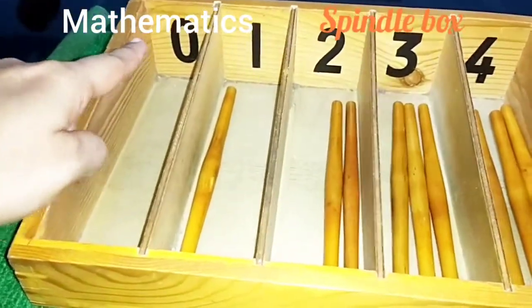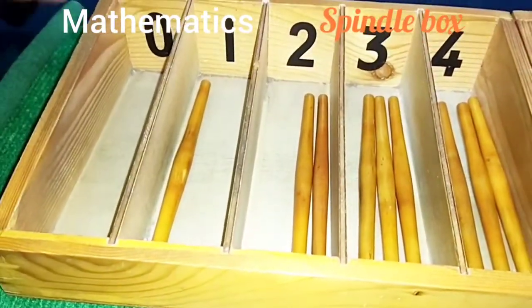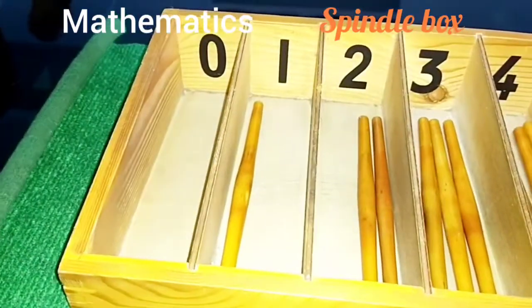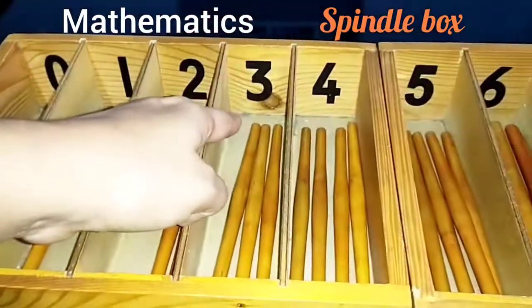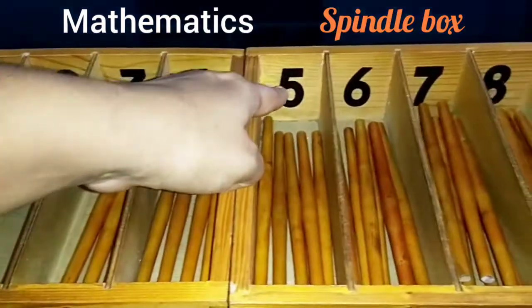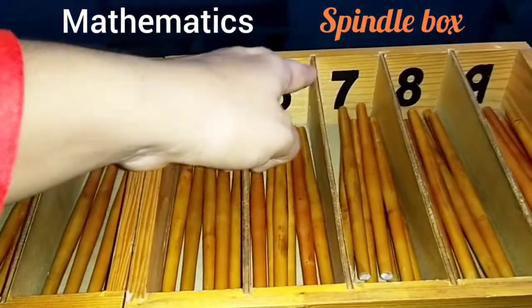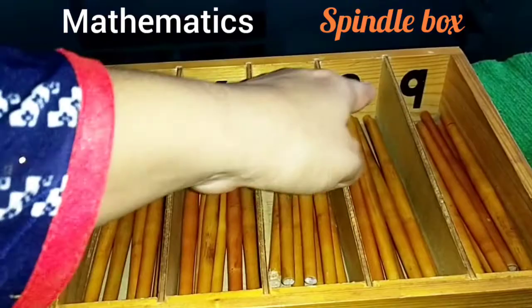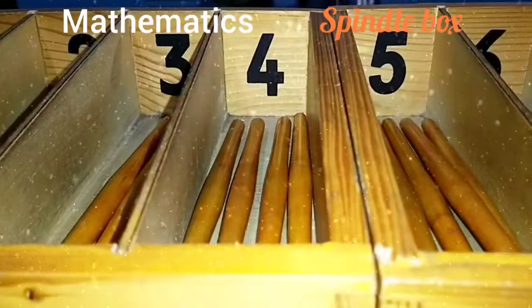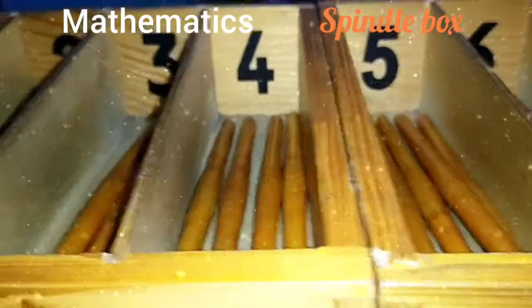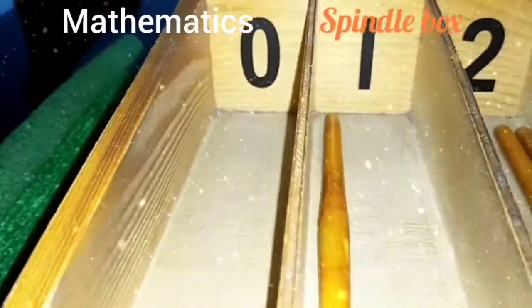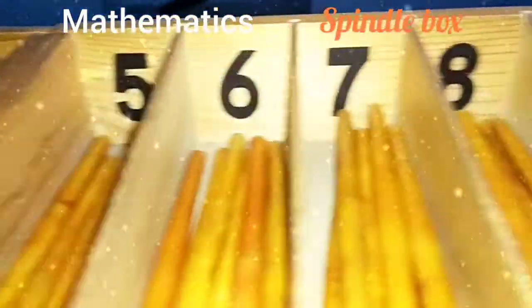Zero. Zero means nothing. So we don't put any spindles on this compartment. Then, one, two, three, four, five, six, seven, eight, and nine. Listen. Today, we have learned the numbers zero to nine.